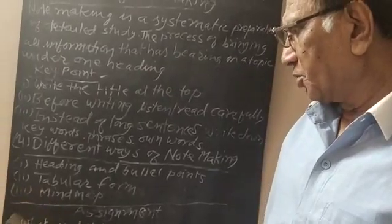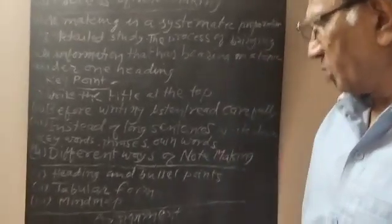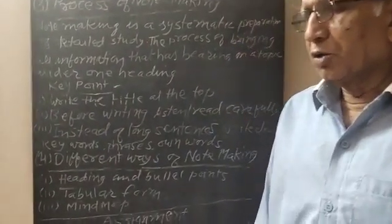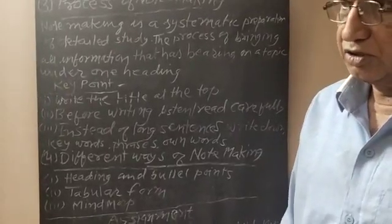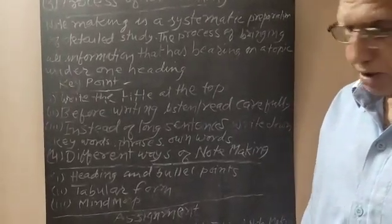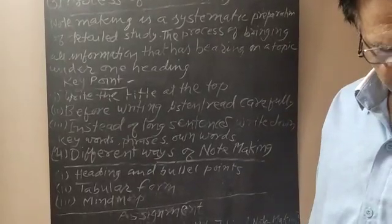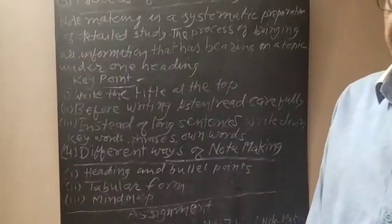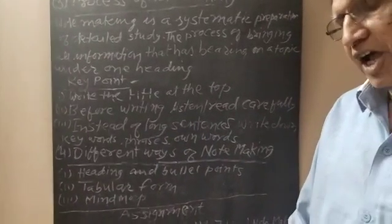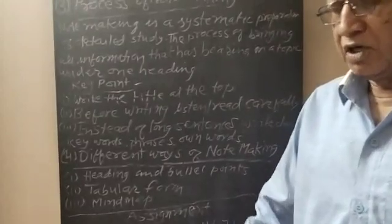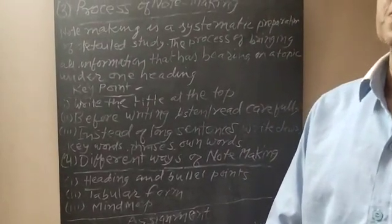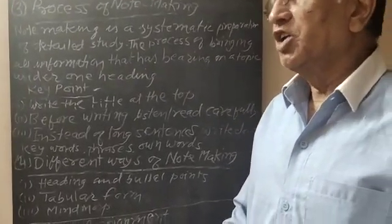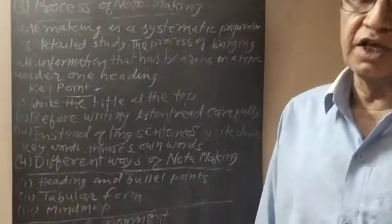Number two, tabular form. Tabular form means the note in the form of a table. For example, first title is written at the top, and then there is a table. First will be the source from which the note maker has taken the information. And then the information, what information he has taken.